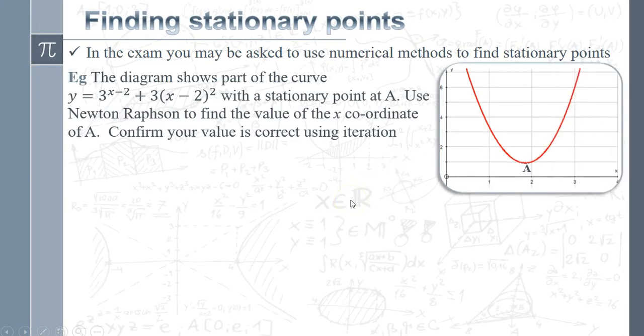We've got a curve, y equals 3^(x-2) plus 3(x-2)^2, with a stationary point at A, and we've got to use Newton-Raphson to find the correct value of A. What I'm going to do is essentially confirm it using iteration, so I'm going to demonstrate how to use both methods in this context. Let's start off with that.